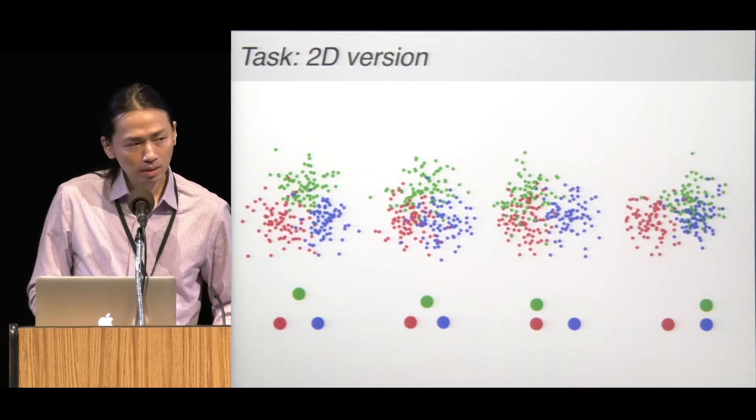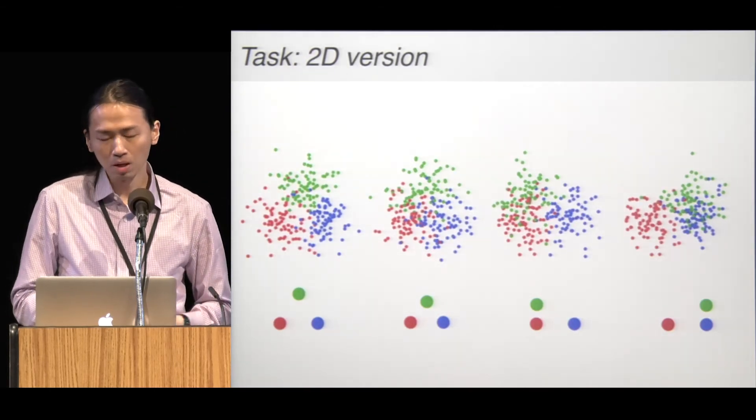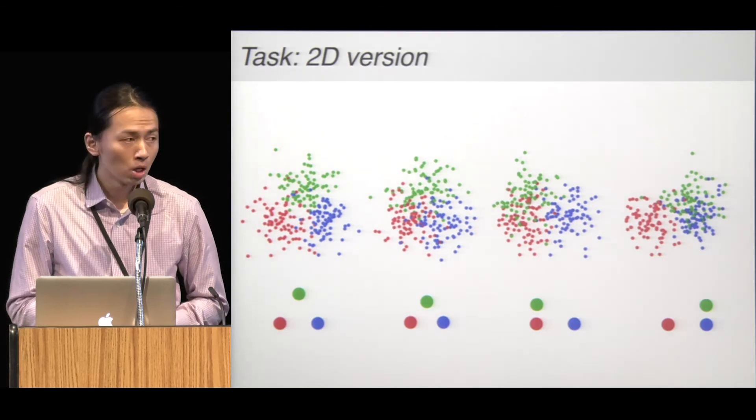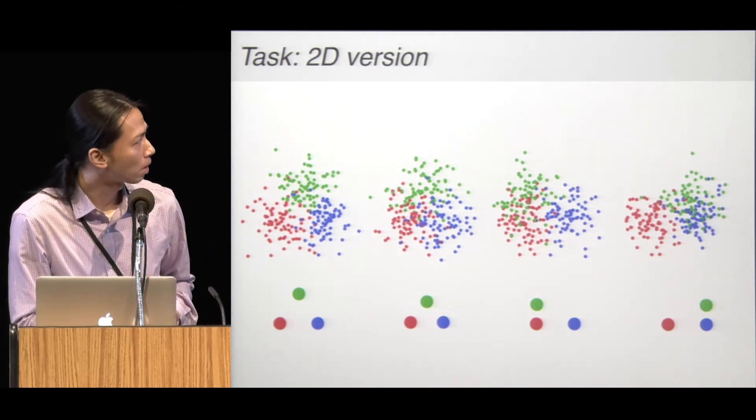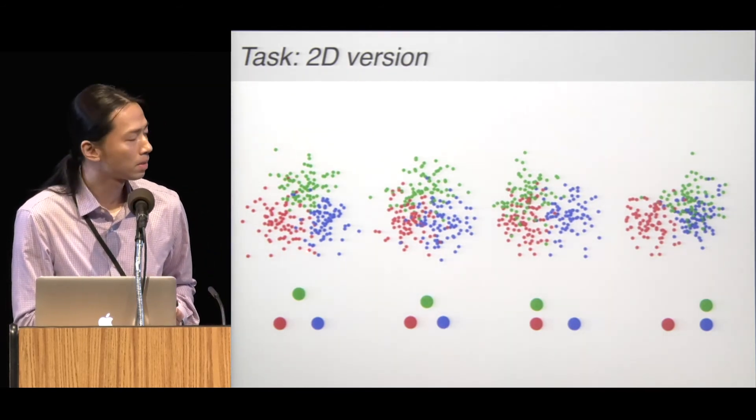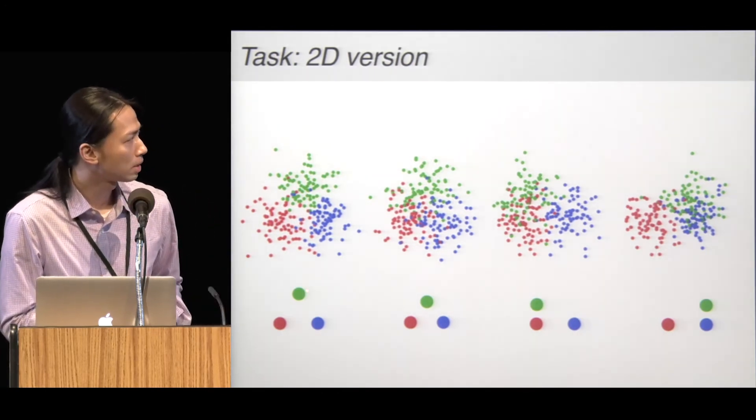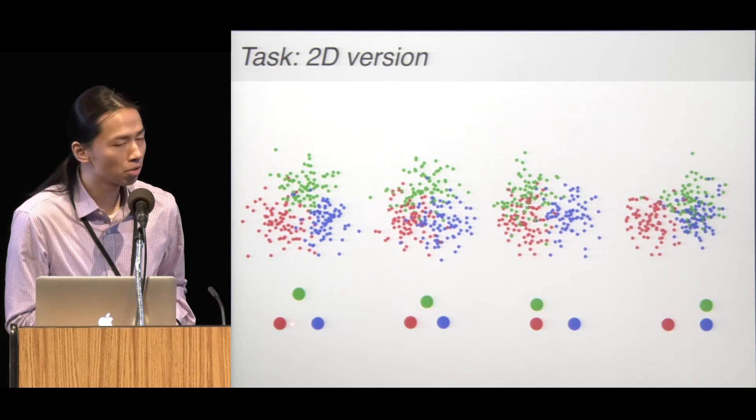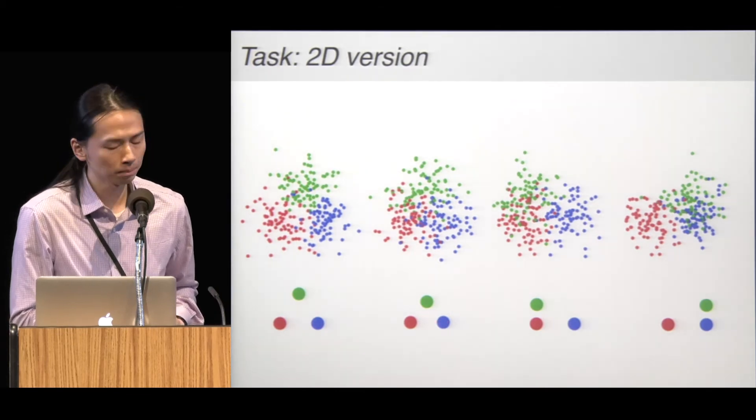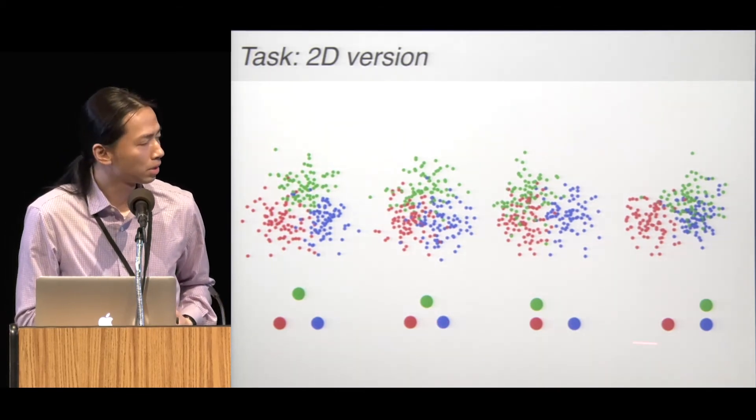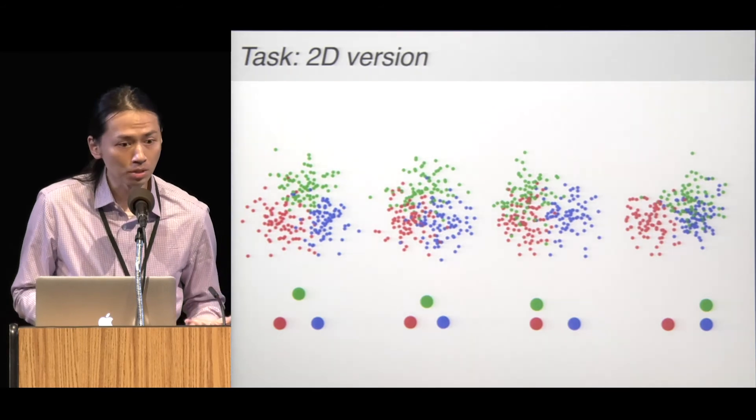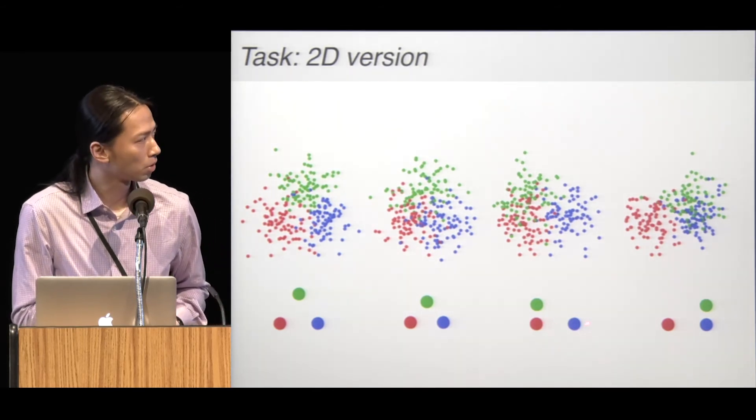In the next experiment, we want to see whether this finding can be extended to other stimulus configurations. Here, the three groups are still Gaussians, but they are positioned in a two-dimensional space. In the first two conditions, the centers form an equilateral triangle, but with different spacing. The last two conditions are asymmetric, with one group closer to the other.